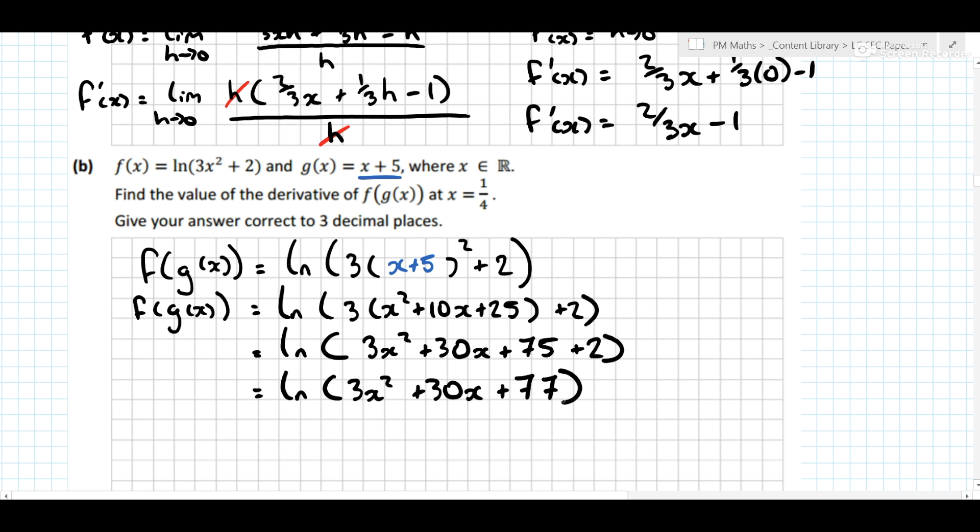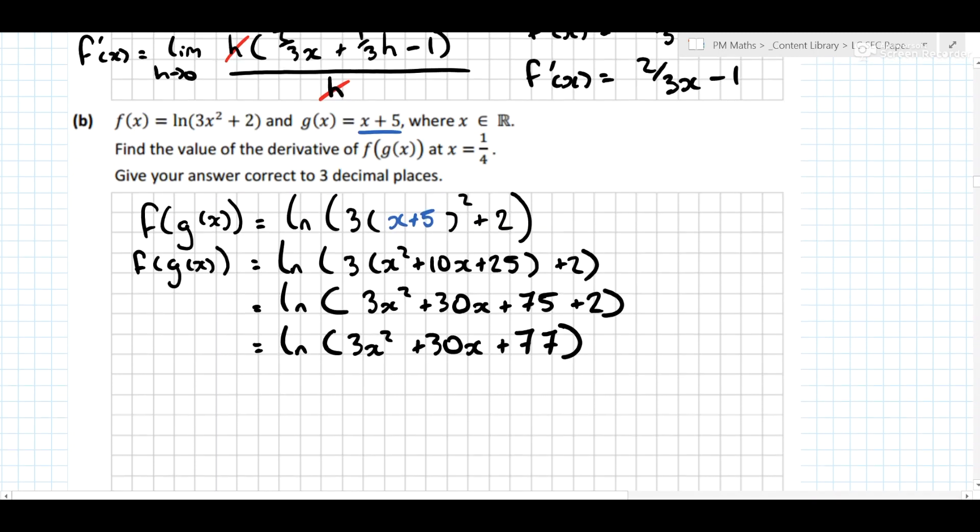And then how do you differentiate a natural log or an ln? Well, if you enter your log tables, there's a little hint there, but most people will forget the key step to it. So what I generally say is to differentiate ln, what you're going to do is put 1 over the bracket and then differentiate the bracket.